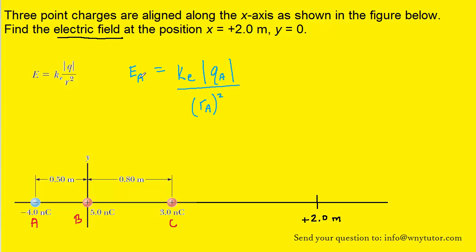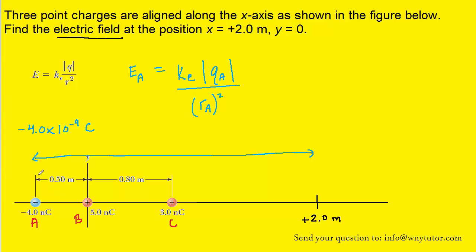To calculate the electric field produced by charge A, we're going to need to know how many coulombs are on that charge, and also the distance from that charge to wherever it is that we are interested in calculating the electric field. The charge was given to us as negative four nanocoulombs. When we plug that into the equation, we have to remember to change nanocoulombs into coulombs by multiplying by ten to the negative nine. The distance from charge A to the point of interest — 0.5 meters to the y-axis plus an additional 2 meters along the positive x-axis — gives us a total distance of 2.5 meters.